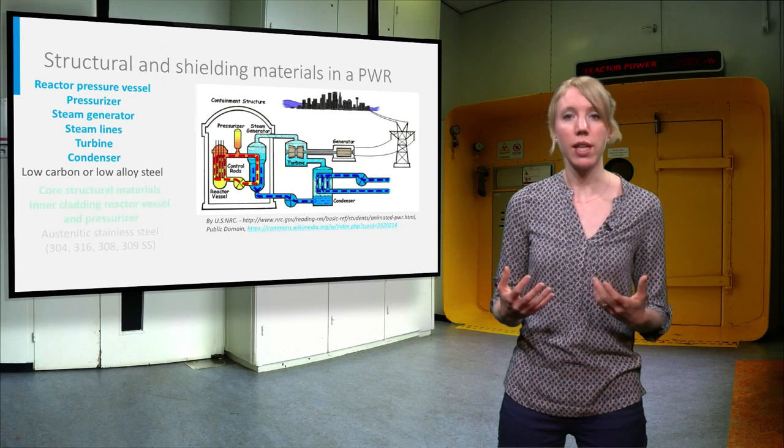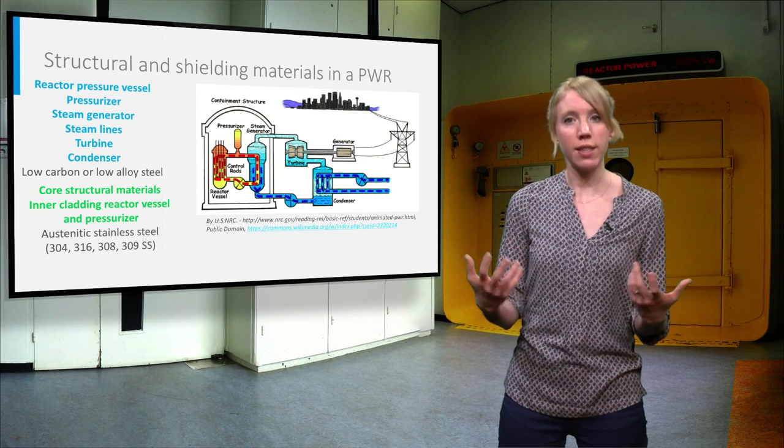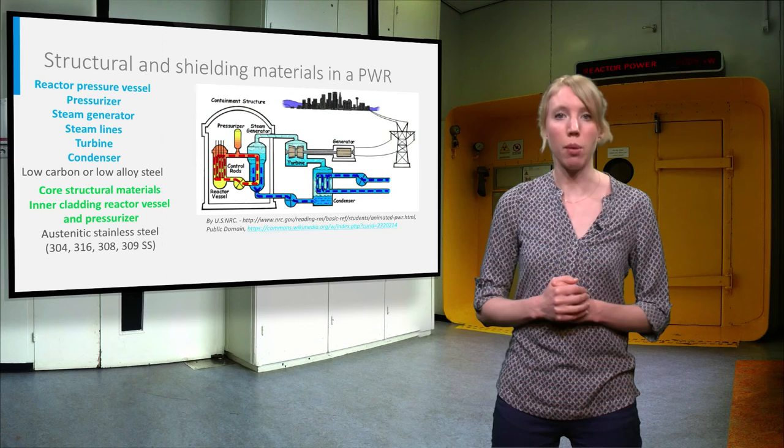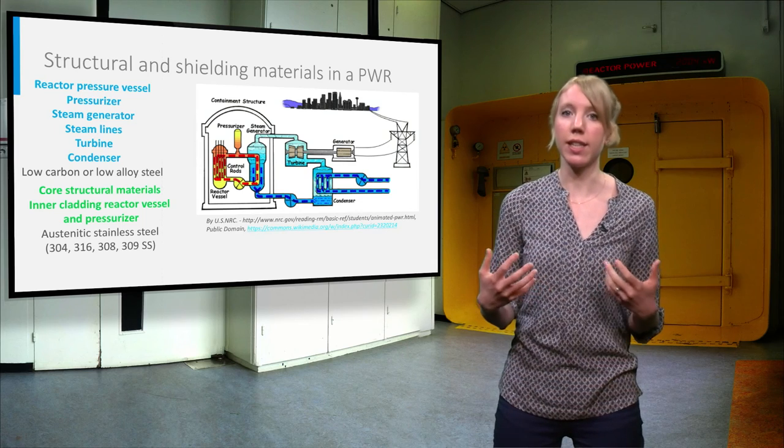The core structural materials and the cladding on the inside surface of the reactor pressure vessel and pressurizer are made of austenitic stainless steel.